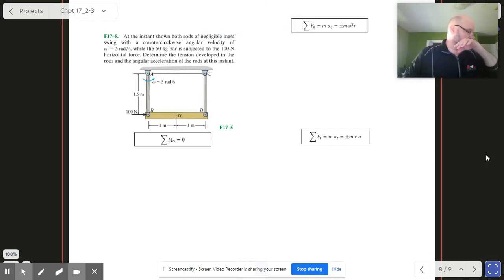Here is problem 17-4, and it's a lot like the example that we were looking at just a few minutes ago. This bar is being held up and it's rotating, the whole apparatus is rotating at 5 radians per second. What's new compared to the last one is that